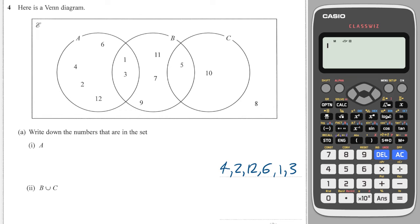B union C, so that's everything which is in the B circle or in the C circle. So we've got 1, 3, 11, 7, 9, 5 and 10.